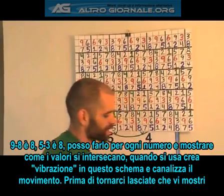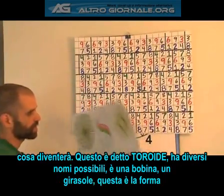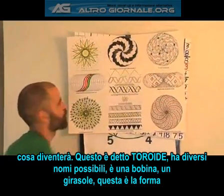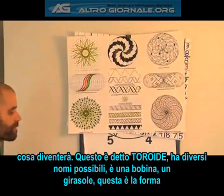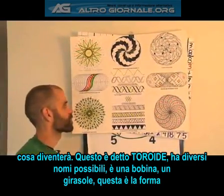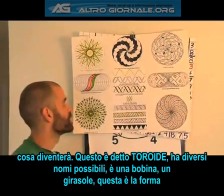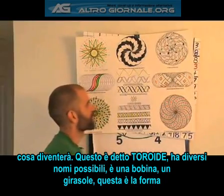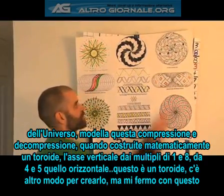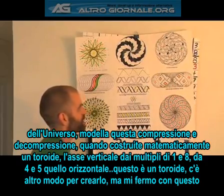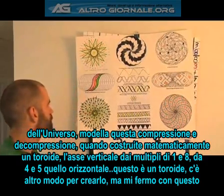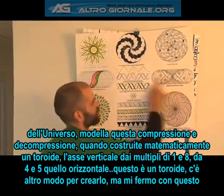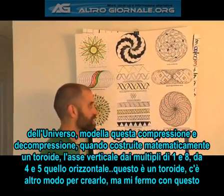Before I get back to this, let me just show you ultimately what that turns into. This is called the torus, the toroid — there are a lot of different names for it. This is a coil. It's a sunflower. This is the shape, in this system, of the universe. It's modeling this compression and decompression. When you build a torus mathematically, all you're showing on your vertical axis are multiples of 1 and 8, and you've got your 4 and 5 on your horizontal. Really, this is just one torus.